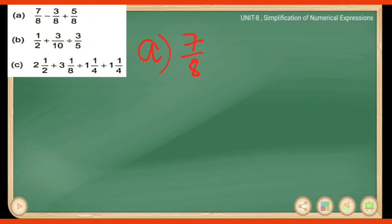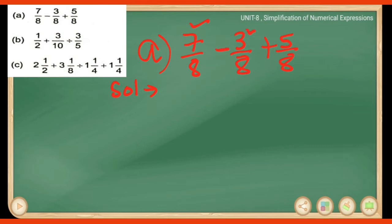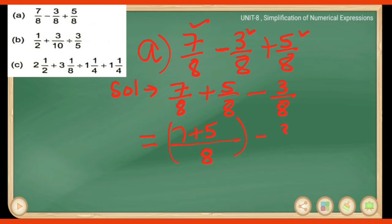First question: 7/8 minus 3/8 plus 5/8. As we can see, these are all like fractions. 7/8 is positive, 3/8 is negative, and 5/8 is positive. According to the DMAS rule, we add the positives first: 7/8 plus 5/8. Taking LCM, it becomes (7+5)/8 = 12/8. Then we subtract 3/8, giving us 12/8 minus 3/8.